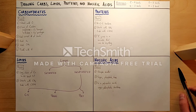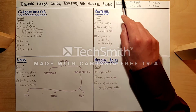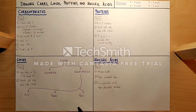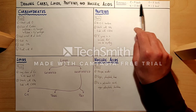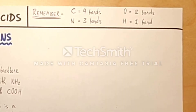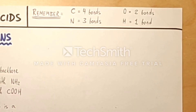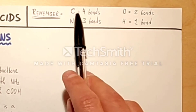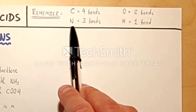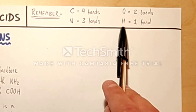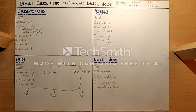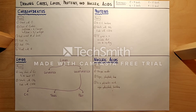Before we get started there's an important thing you need to remember. We are going to be dealing with four different elements: carbon, nitrogen, oxygen, and hydrogen. It is important to remember how many bonds each one always makes. Carbon will always make four bonds, nitrogen will always make three, oxygen will always make two, and hydrogen will always make one bond — a bond being a direct link to another atom in a molecule.